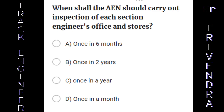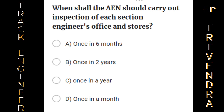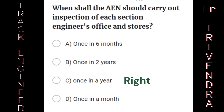When shall the AEN carry out inspection of each Section Engineer's office and stores? A. Once in 6 months. B. Once in 2 years. C. Once in a year. D. Once in a month. The right answer is: once in a year.